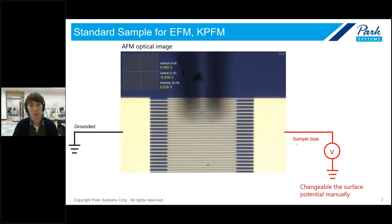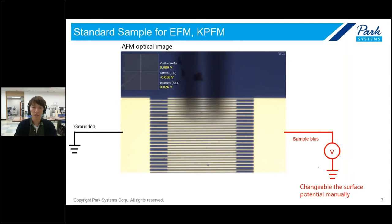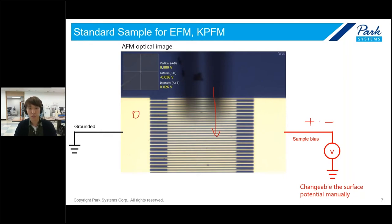This is the sample for the EFM and KFM live demo. It has two different electronic patterns: the left-hand side is electrically grounded, and the right-hand side is connected to the AFM sample bias line. This means if I apply any sample bias, the surface potential on that side changes manually. Scanning across this sample allows you to see zero potential on the grounded side and the applied potential on the biased side simultaneously.